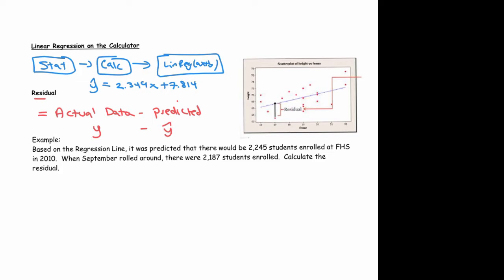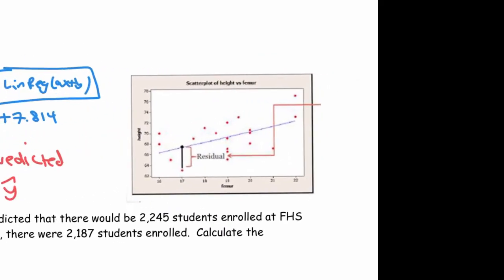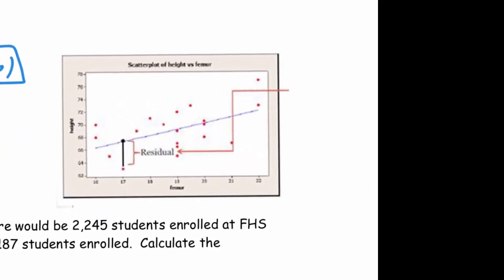As an example, you can see this in the picture on the right. Let me zoom in. This is the actual data value and this is the predicted value because it's on the line. You can see that would be a positive residual because your predicted is bigger than your actual.